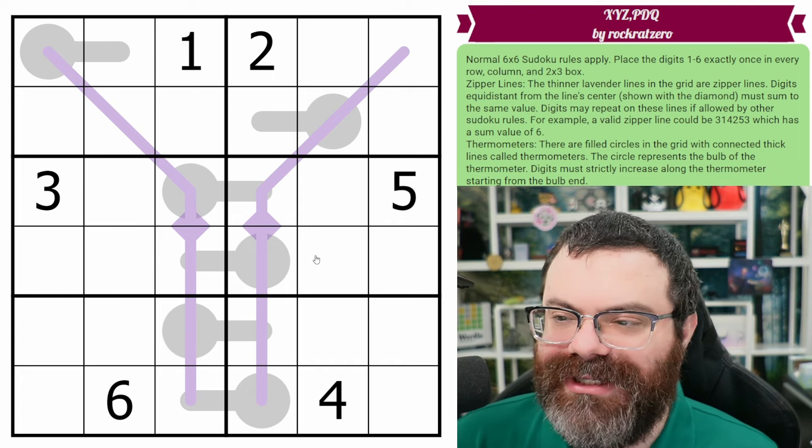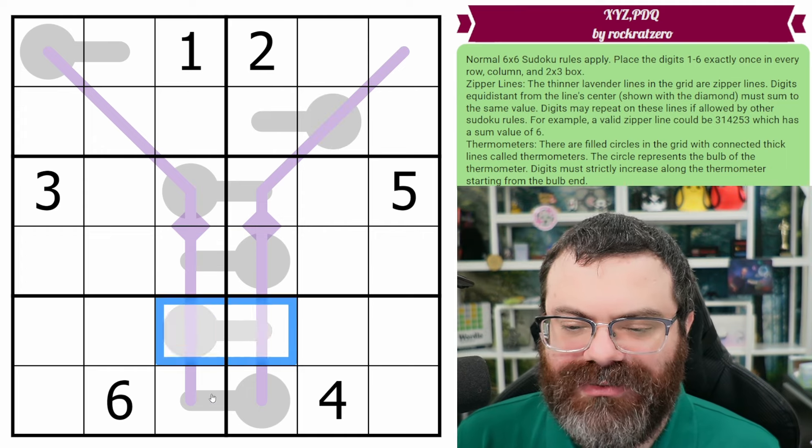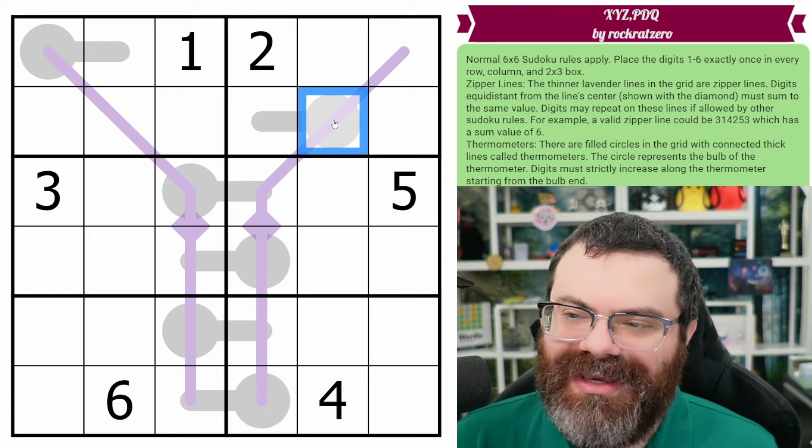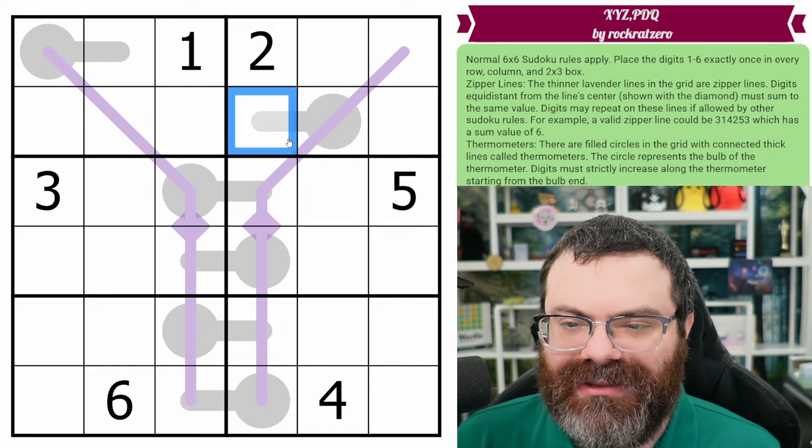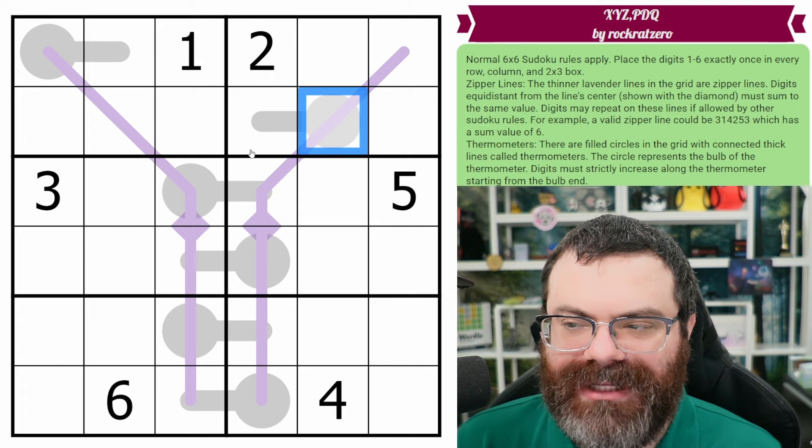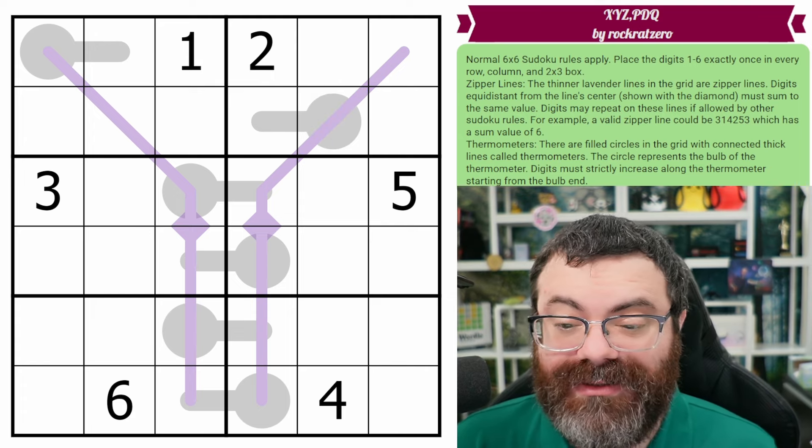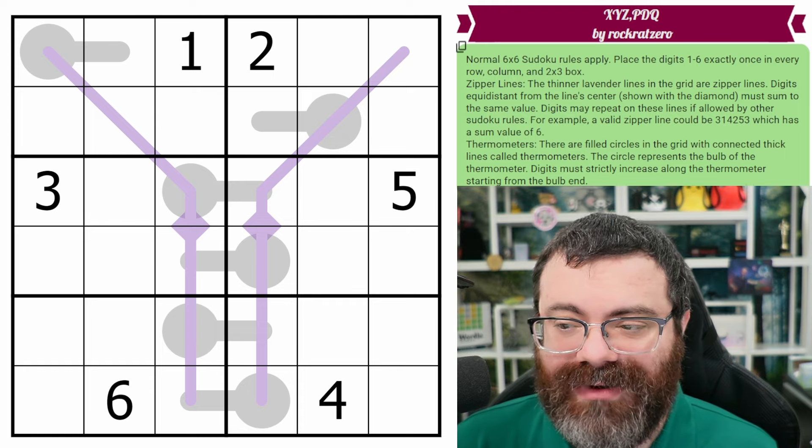We also have thermometers in the grid. Those are these little two length thermos here, these lines with a circle. So because these are all two length, I can just say that the digit in the circle is smaller than the digit on the connected line. So thermometers increase from the bulb end. And that's it. Those are the rules. There's a link in the description if you'd like to try the puzzle yourself. And I'm going to get started right now.